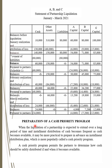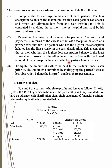The next topic is the preparation of the cash priority program. It is prepared when the liquidation of a partnership is expected to extend over a long period of time, and installment distribution of cash becomes frequent as cash becomes available. It may be more practical to prepare in advance an installment distribution plan, more popularly called the cash priority program, which permits the partners to determine how cash should be safely distributed if and when it becomes available.